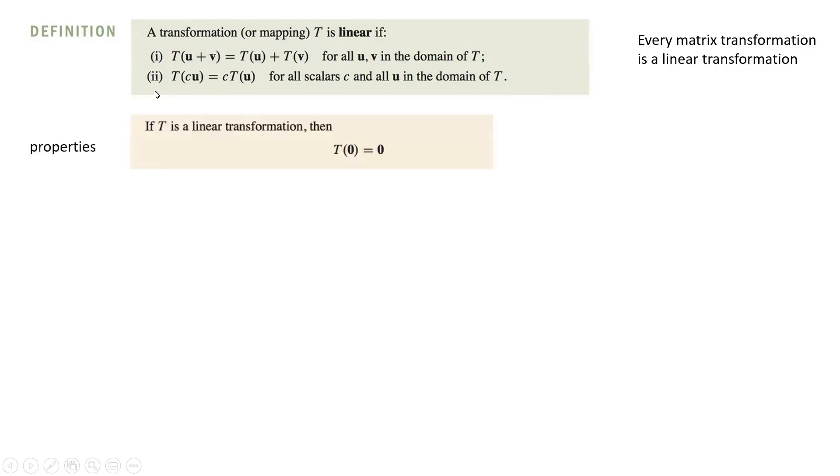So what kind of properties do we have in linear transformations? Pretty straightforward, if we have a zero vector, its transformation always gives us a zero vector. You can easily test it using the second property.